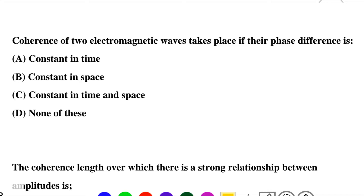So the first question: concurrence of two electromagnetic waves takes place if their phase difference is — option A: constant in time, option B: constant in space, option C: constant in time and space, option D: none of the above. So the correct answer is option C: constant in time and space.